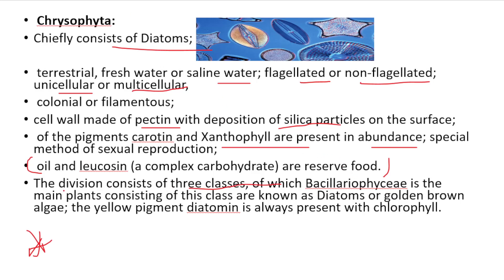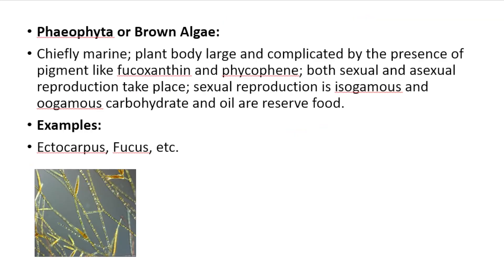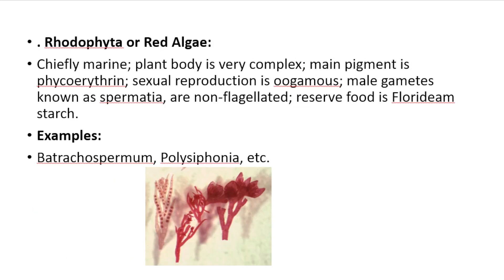Phaeophyta (brown algae): Chiefly marine. Presence of fucoxanthin and phycophene pigments. Both sexual and asexual reproduction occur; sexual reproduction is isogamous and oogamous type. Reserve food is carbohydrate and oil. Examples: Ectocarpus, Fucus.